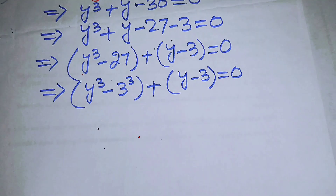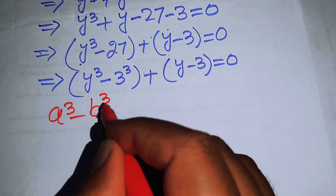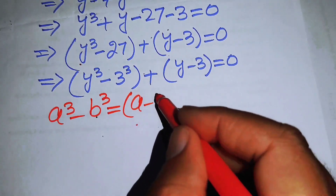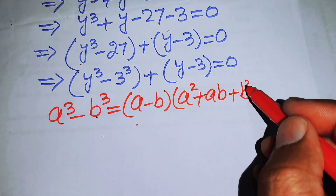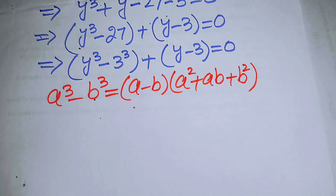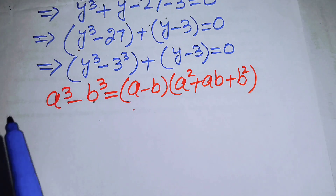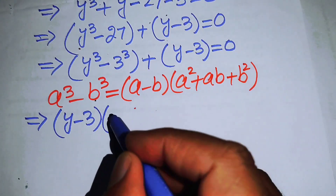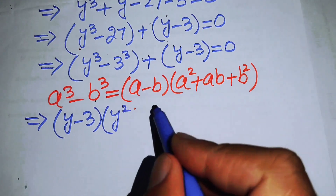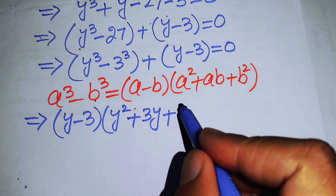This gives us y cubed minus 3 cubed plus y minus 3 equals 0. We now apply the difference of cubes formula: a cubed minus b cubed equals a minus b times a squared plus ab plus b squared. So the first factor becomes y minus 3 times y squared plus 3y plus 3 squared.